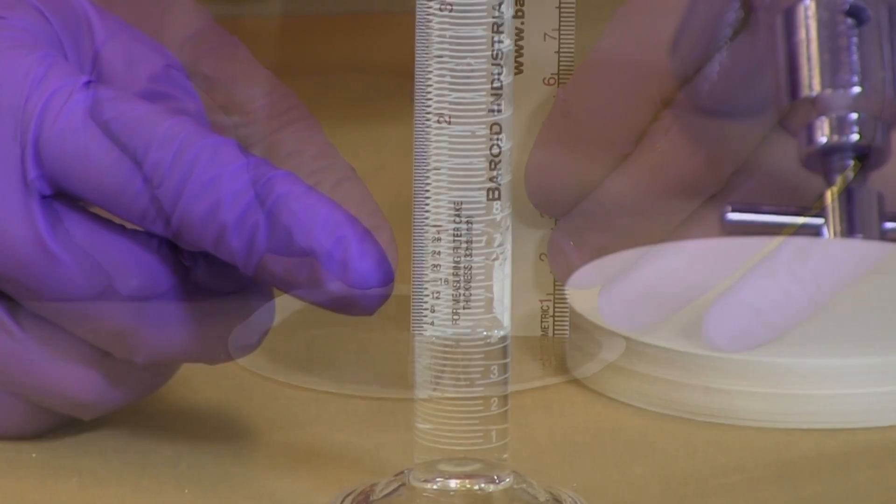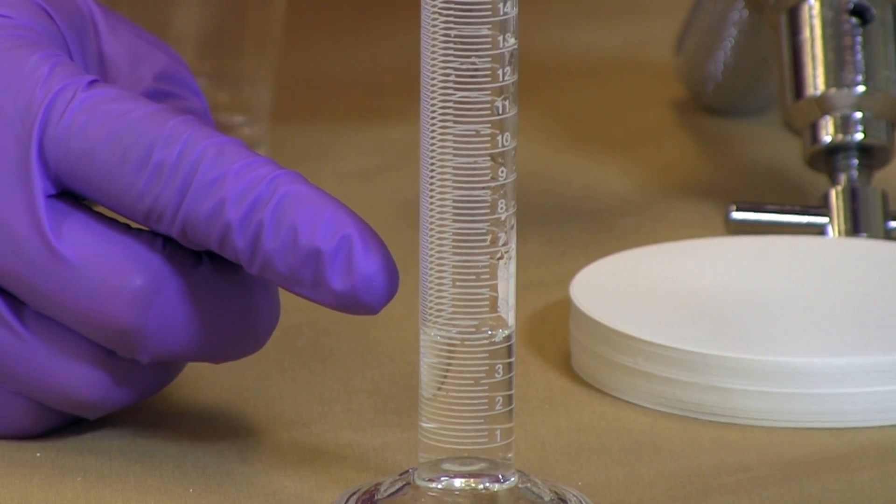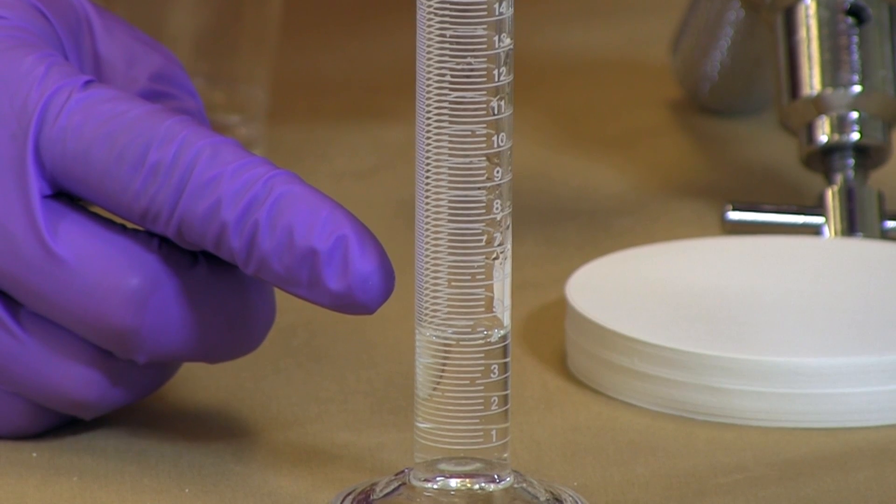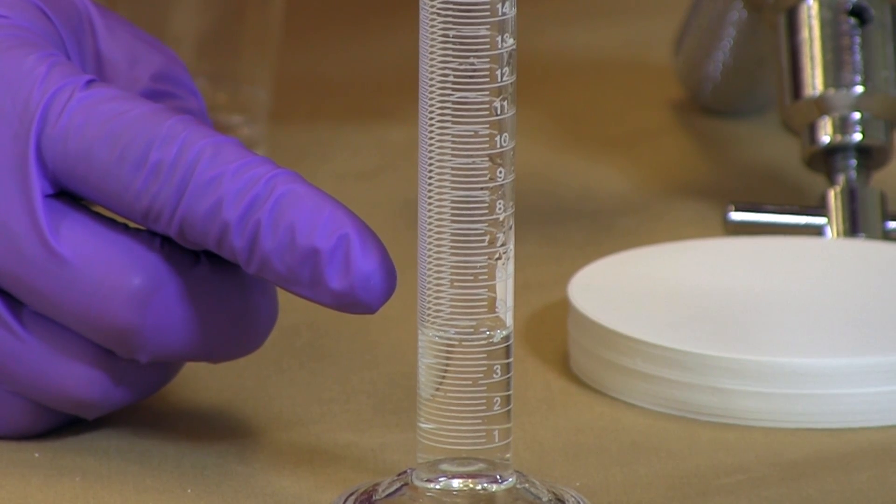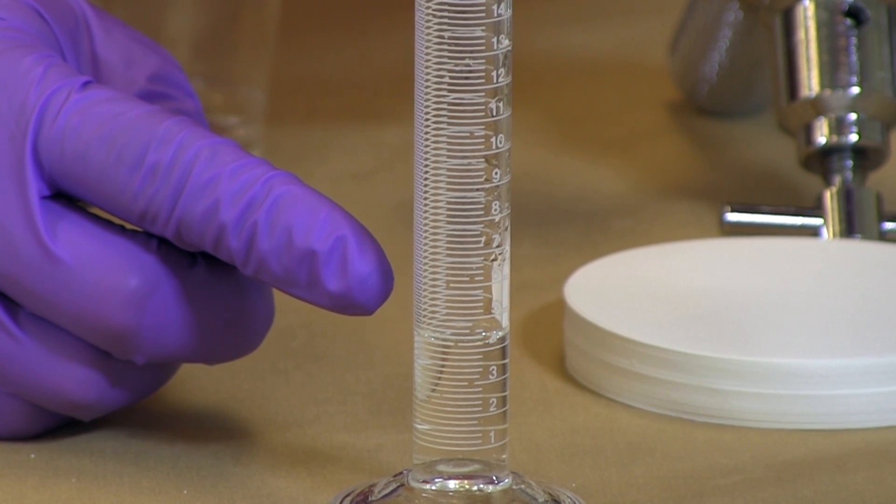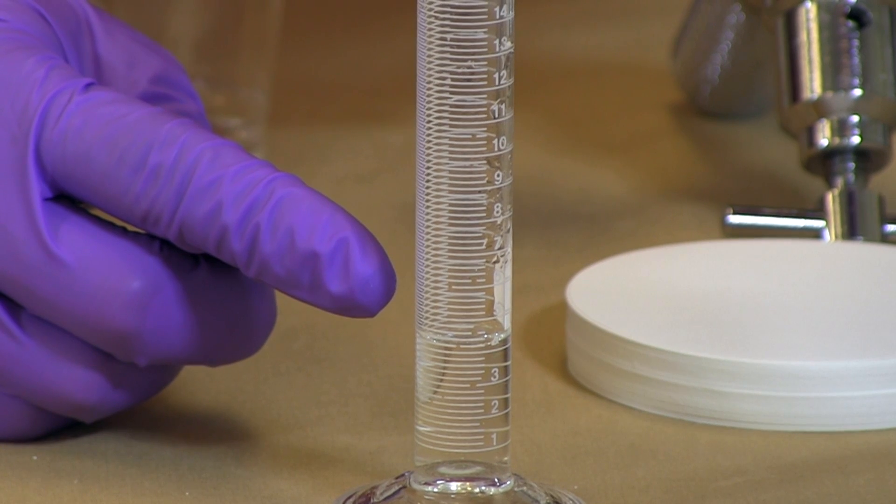Read the filtrate volume in the graduated cylinder to the nearest 1/10th of a milliliter. The filtrate volume here is 4.2 milliliters for 30 minutes.